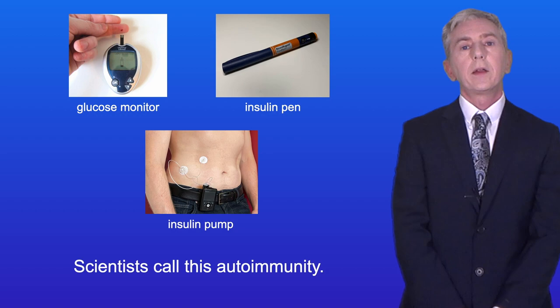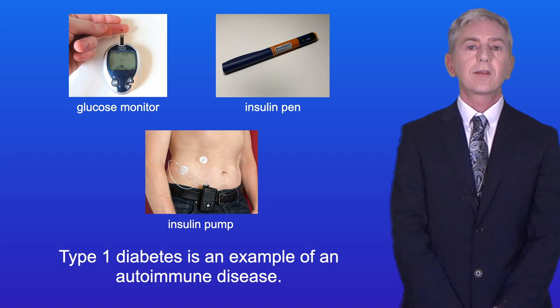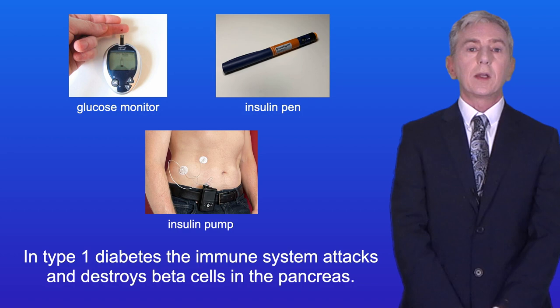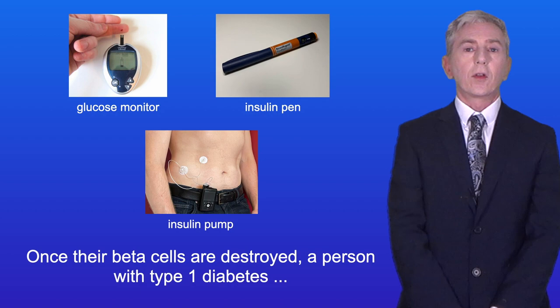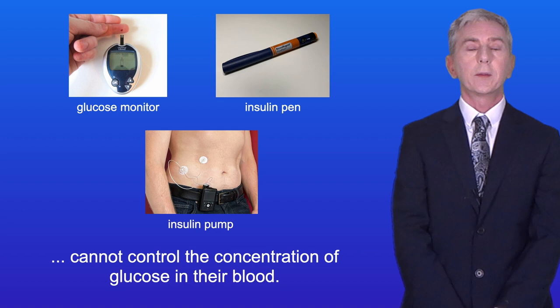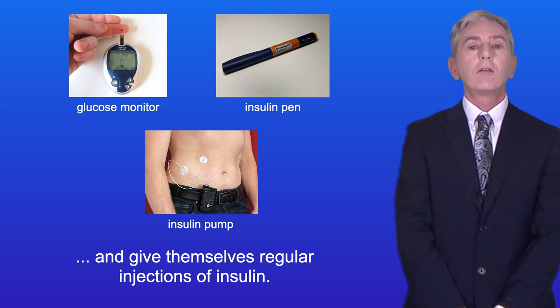Type 1 diabetes is an example of an autoimmune disease. In type 1 diabetes, the immune system attacks and destroys beta cells in the pancreas. Beta cells normally produce insulin as part of the body's glucose control system. Once their beta cells are destroyed, a person with type 1 diabetes cannot control the concentration of glucose in their blood. To compensate, they need to test their blood glucose level and give themselves regular injections of insulin.